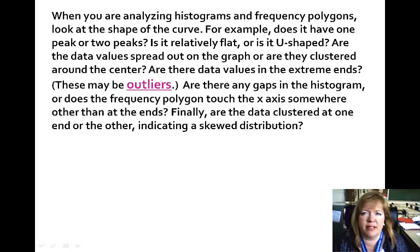So when you're analyzing histograms and frequency polygons, you can look at the shape of the curve. Things that you look for is, is it bimodal? Does it have one or two peaks? Is it relatively flat or U shape? Are the data spread out or are they clustered in one particular area? Are the data values extreme at the ends? These may be outliers. So outliers are data points that are like outside where most things are. Are there gaps in the histogram or does the frequency polygon touch the x-axis somewhere other than at the ends? Finally, are the data clustered around, at one end or the other, indicating skewed distribution? All these things give us clues to how people responded to a survey or our data collection.